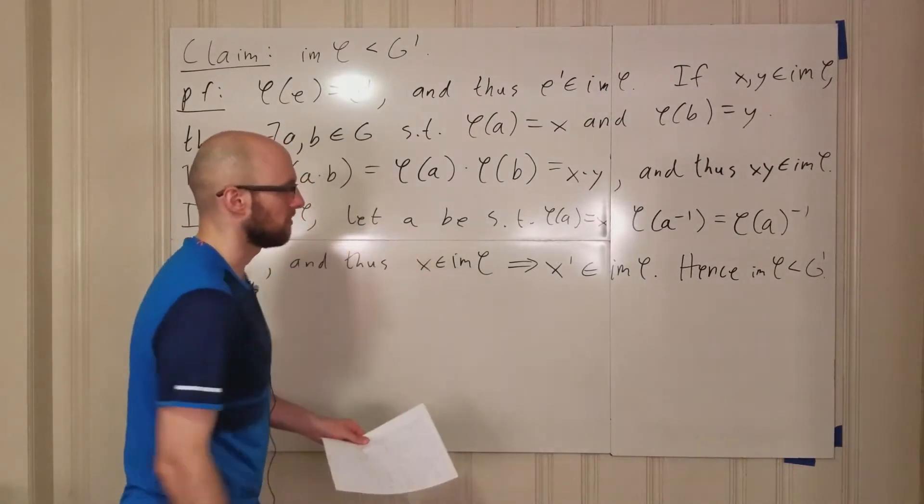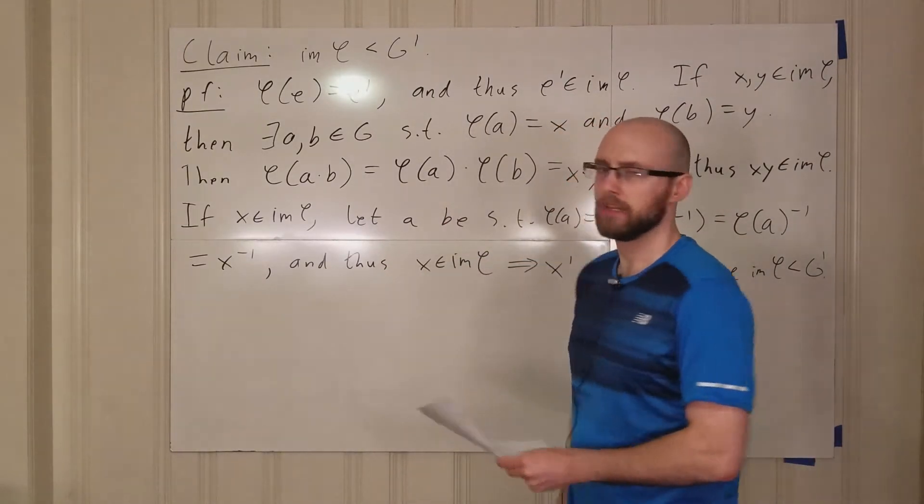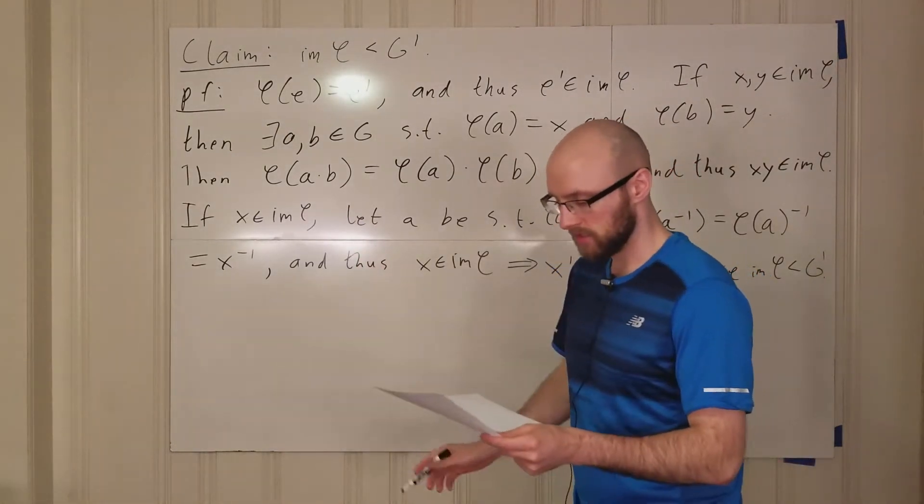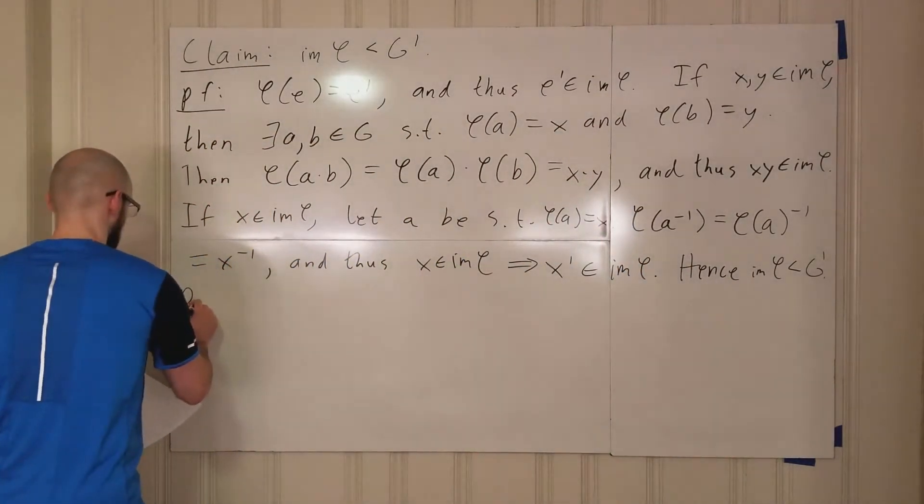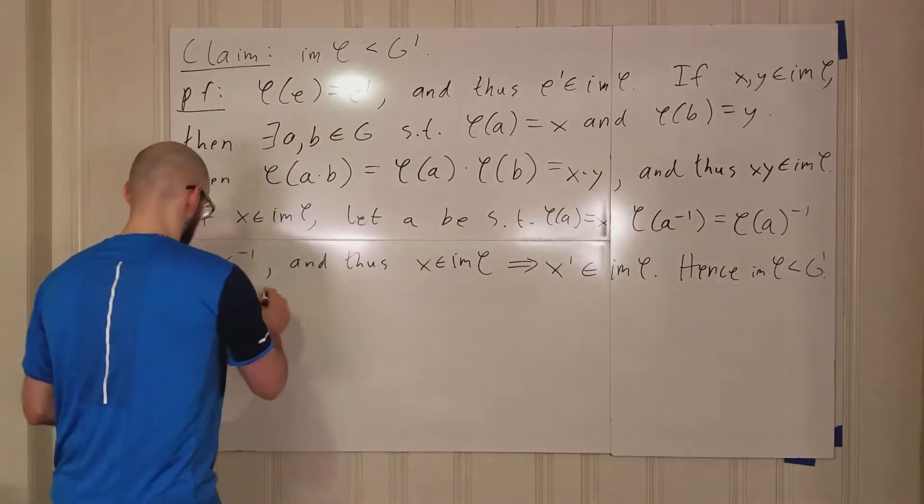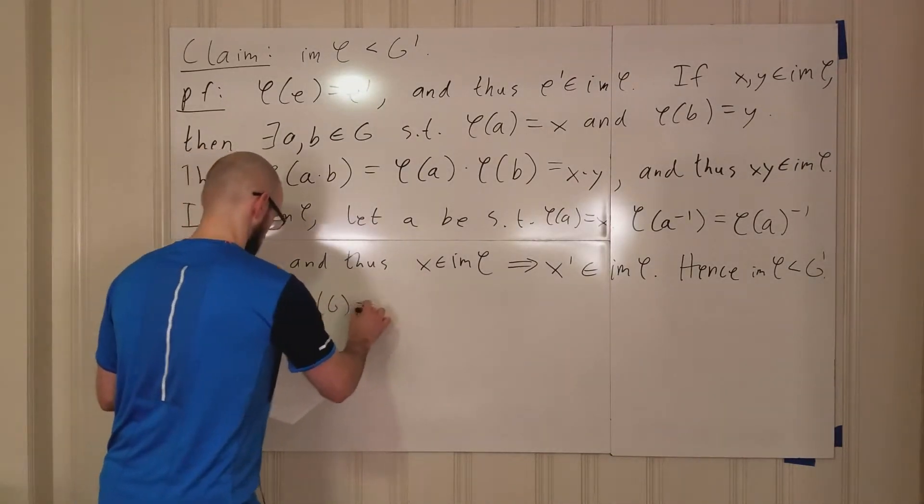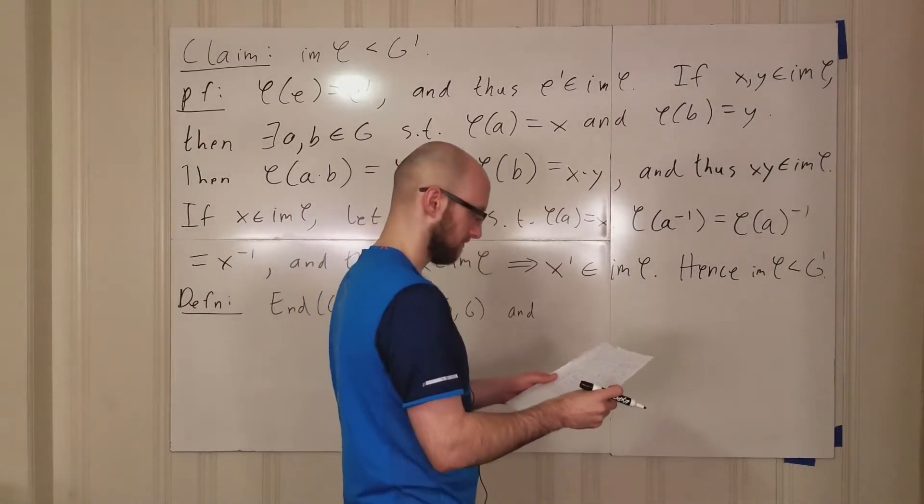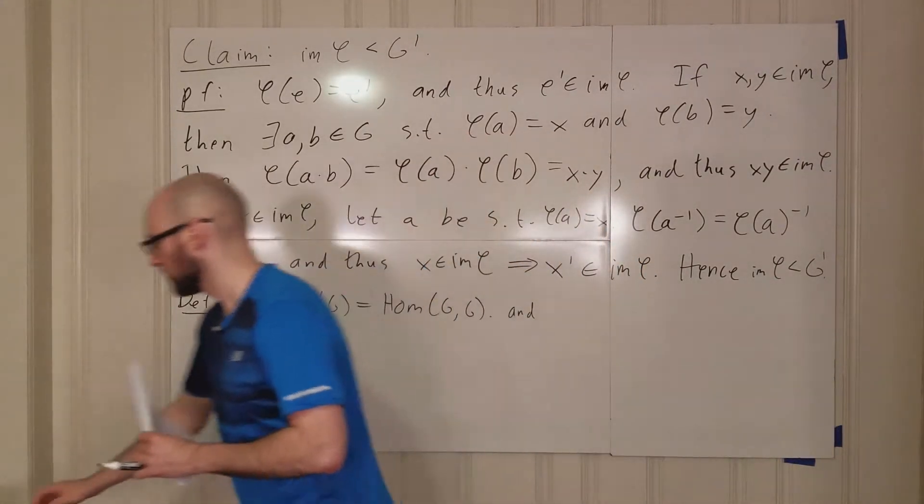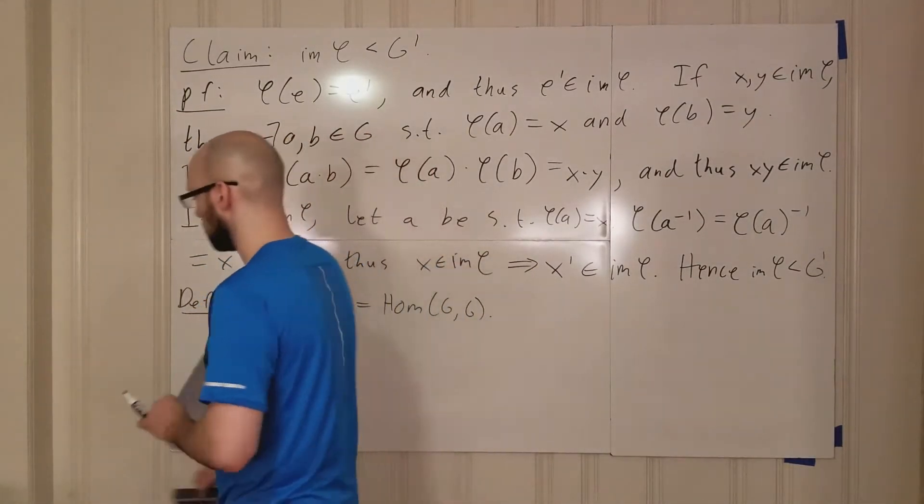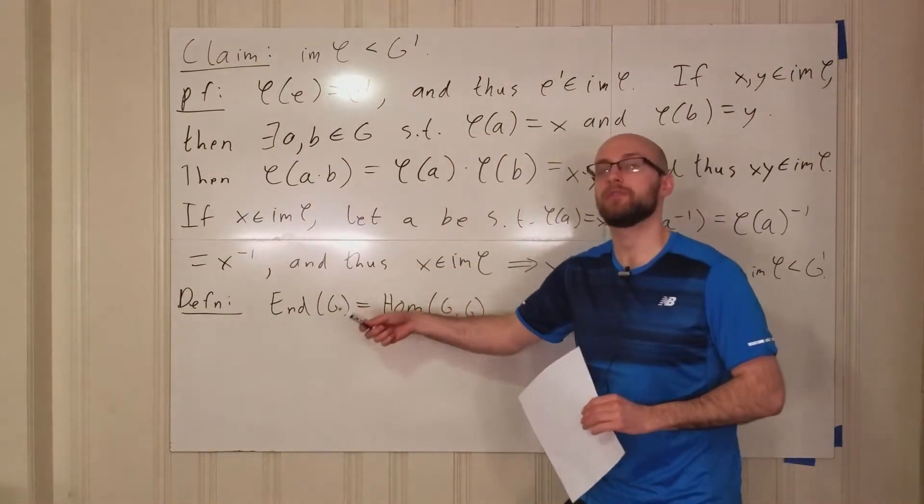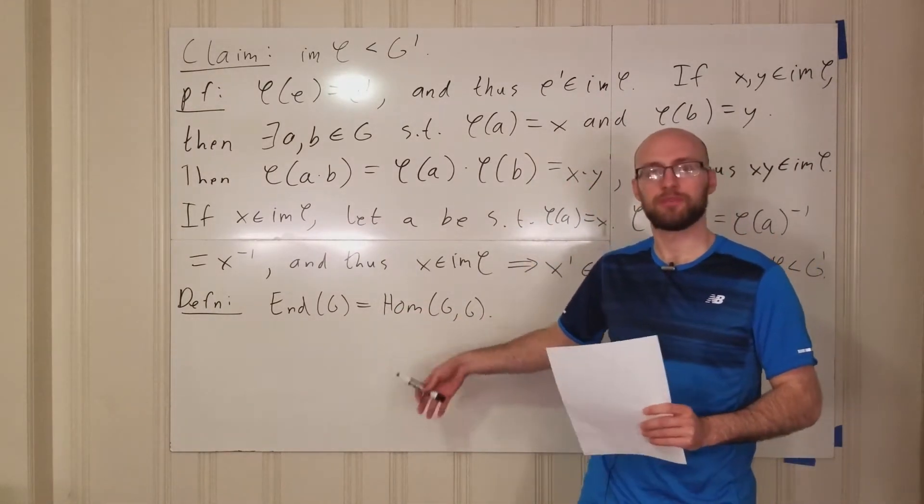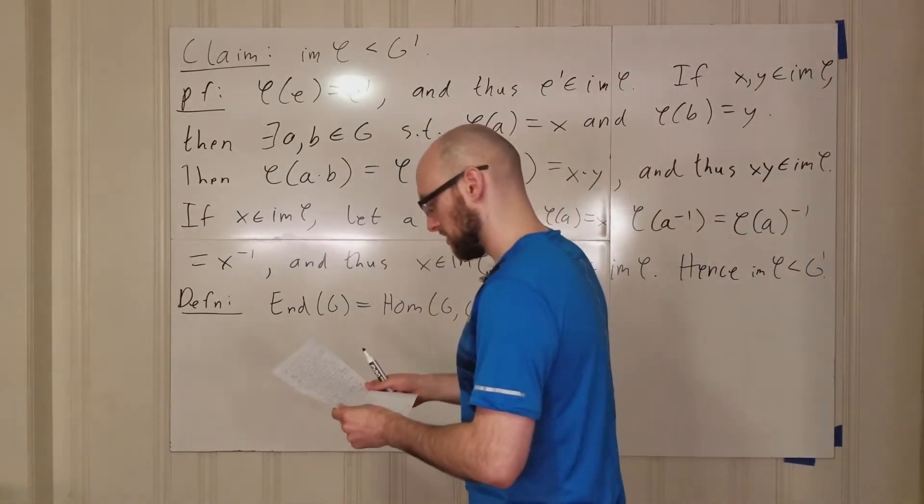And then, yeah, there's a few more definitions. And that basically wraps up this lecture. So, let's see here. We have... I already defined what Hom G G prime is. Definition: End G is Hom G comma G. That's it. That's all I want to say here. So, this End G, this means endo... This stands for endomorphism. So, this is the collection of endomorphisms of the group G. And it's just the collection of group homomorphisms from G into G.